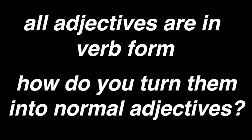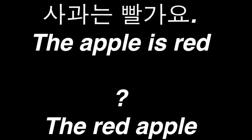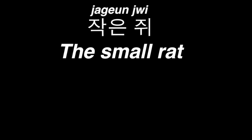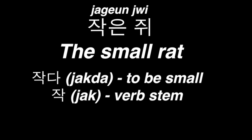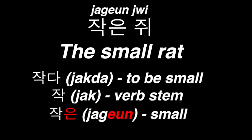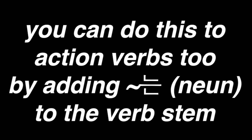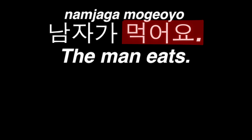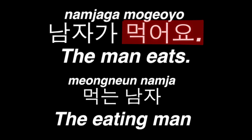If adjectives are all verbs, what if you wanted to give them descriptive qualities — for example, change 'the apple is red' into 'the red apple'? You simply add 은 to the adjective stem, or ㄴ if it ends with a vowel. For example, 쥐는 작아요 turns into 작은 쥐, because the verb 작다, 'to be small,' has the stem 작, to which we add 은 to make the adjective 작은, meaning 'small.' You can apply this strategy to action verbs by adding 는. For example, 남자가 먹어요, 'the man eats,' becomes 먹는 남자, 'the eating man.'